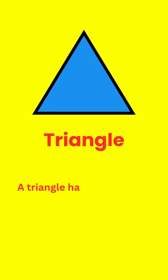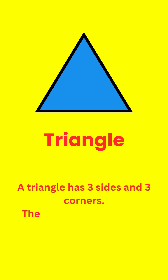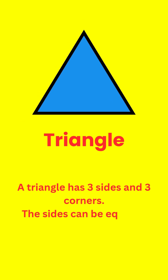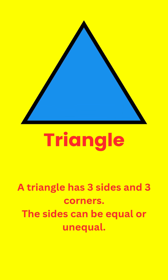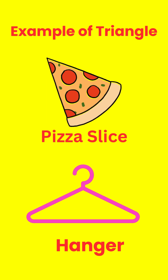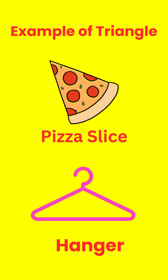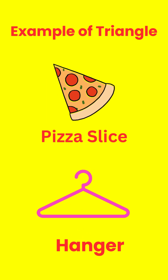Triangle. A triangle has three sides and three corners. The sides can be equal or unequal. Examples of triangle in our daily life are pizza slice and hanger.